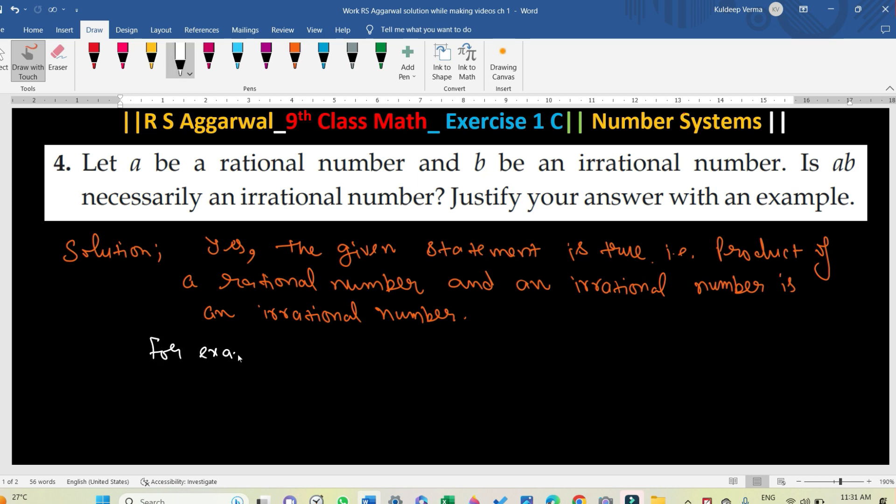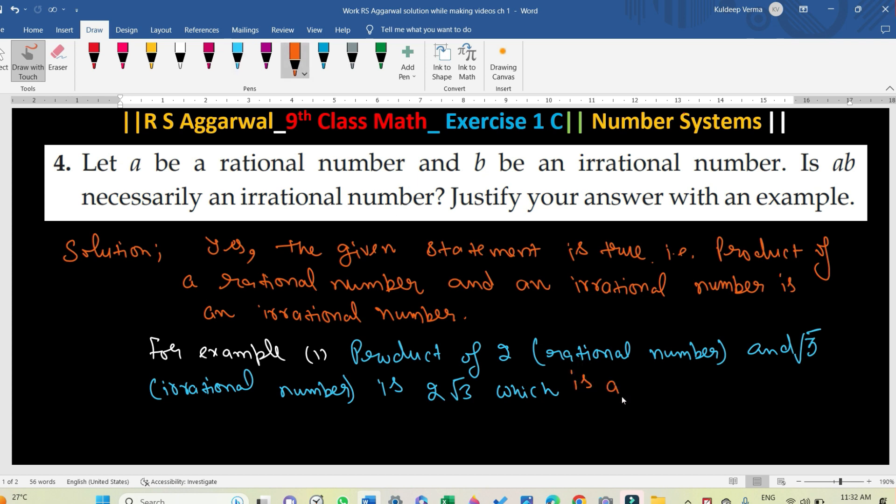For example, product of 2, which is a rational number, and root 3, which is an irrational number, is 2 root 3, which is an irrational number, right.